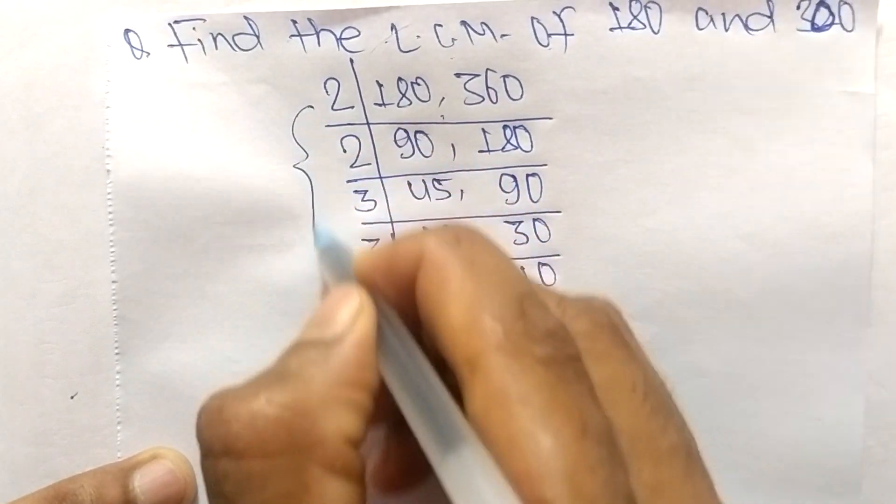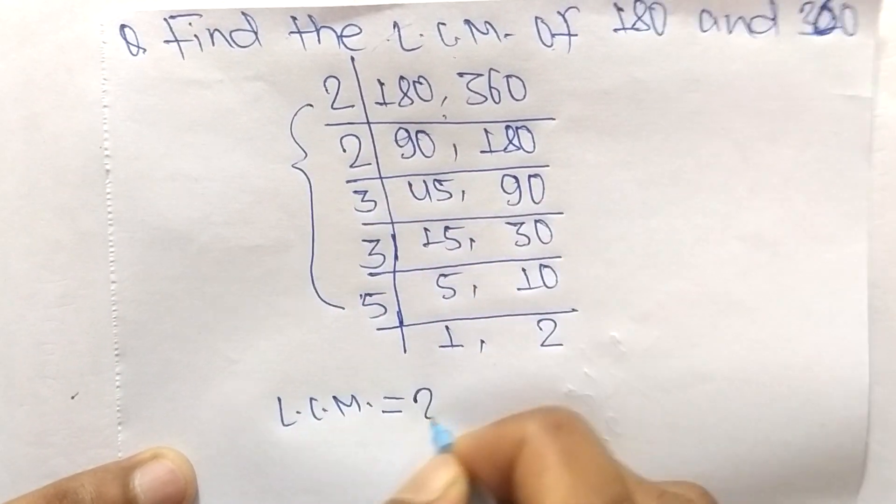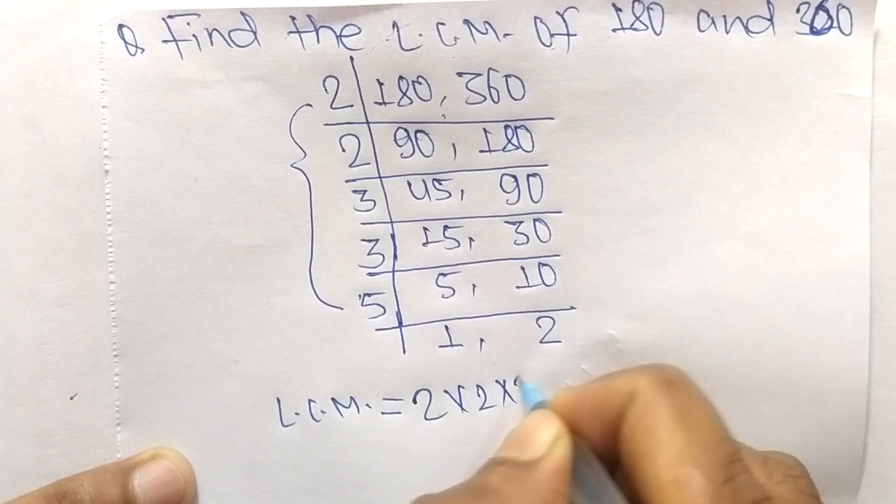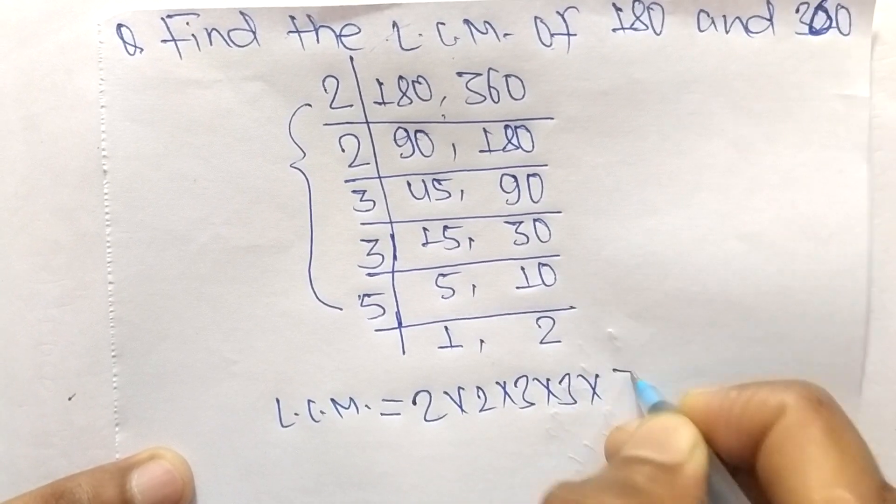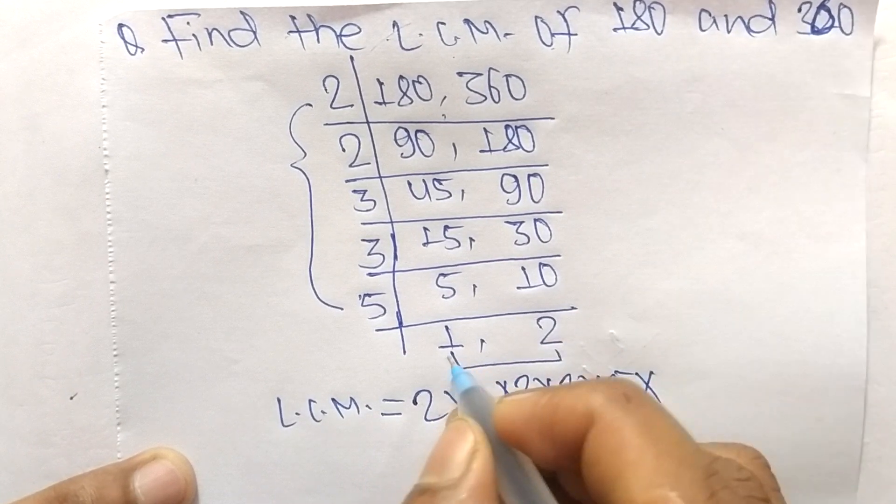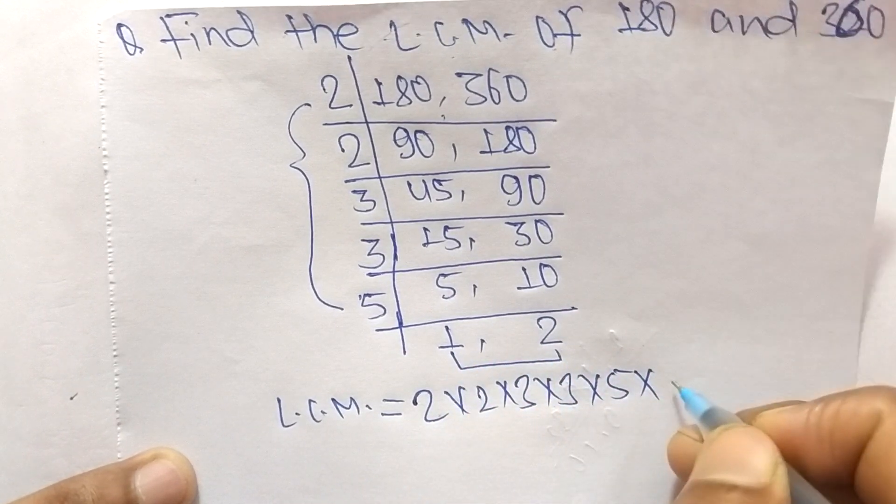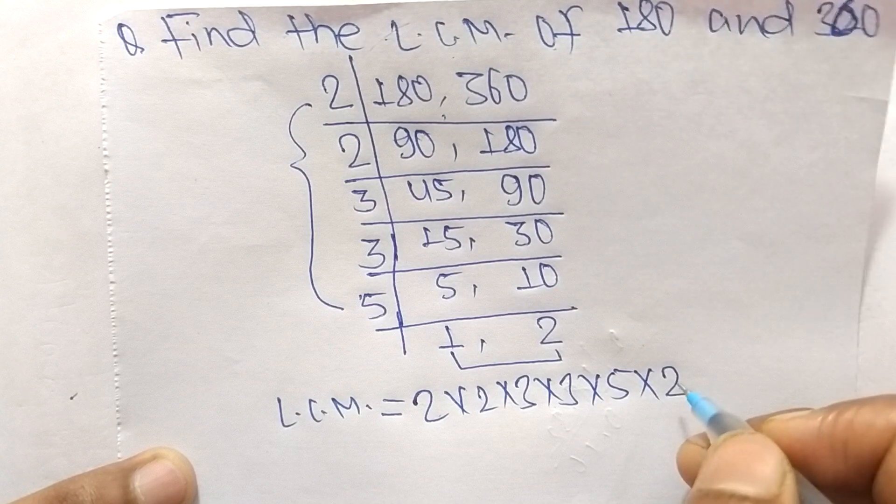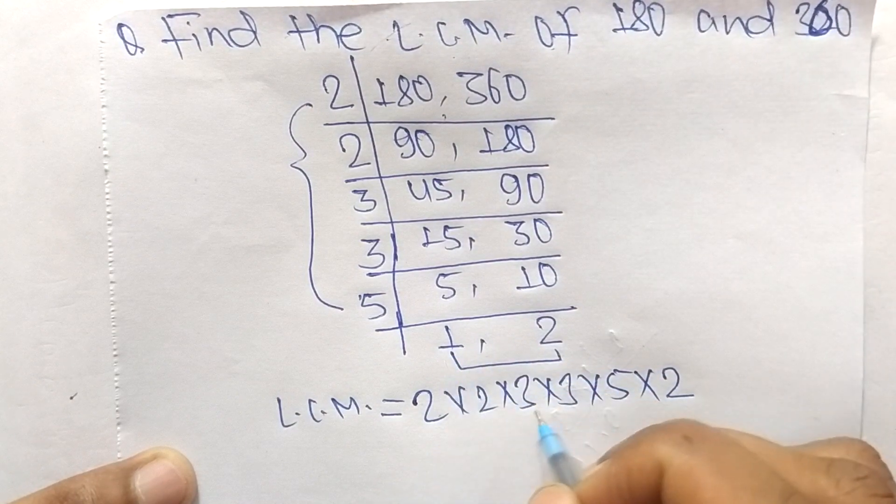And from this part we have 1 and 2. We take here only 2 and we neglect 1, because by multiplying any number with 1 we get the same result, so we don't take 1.